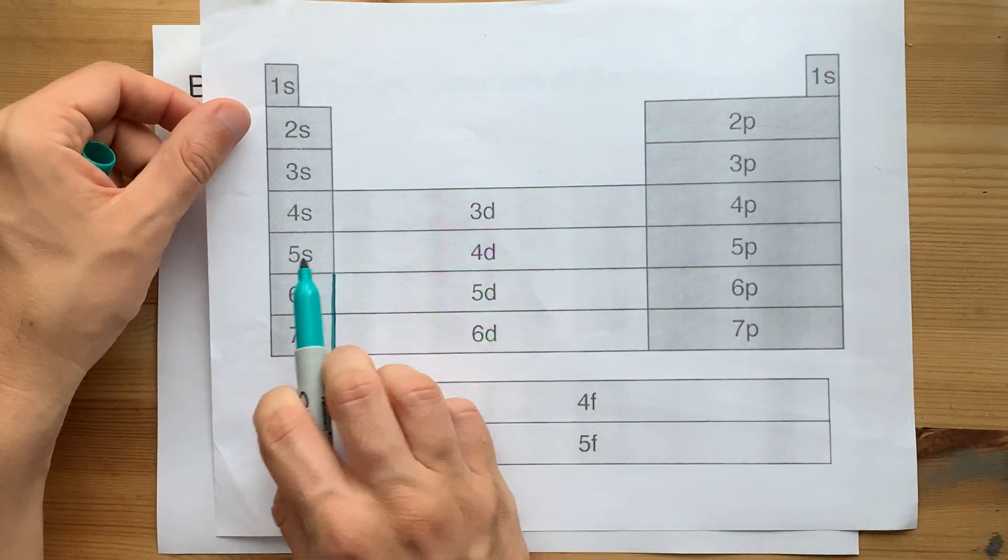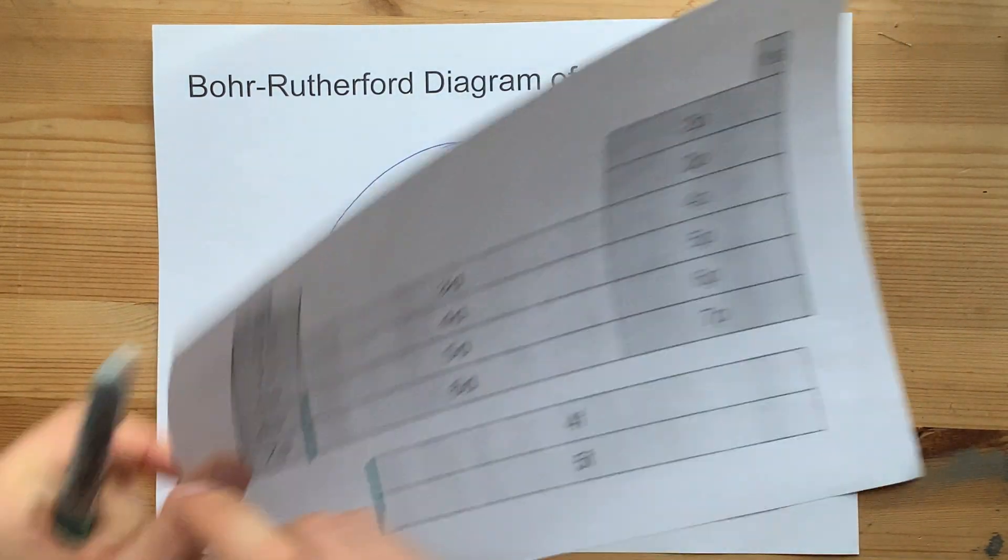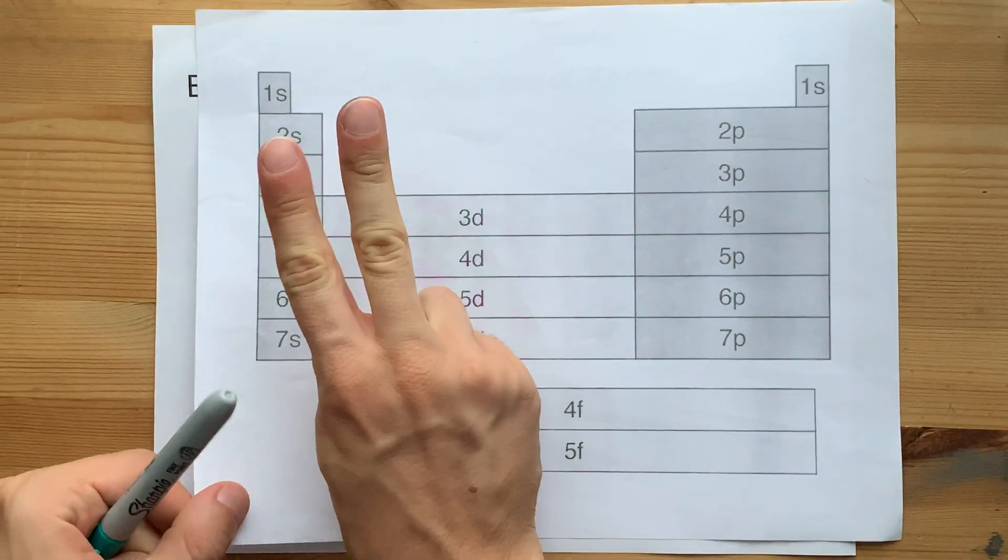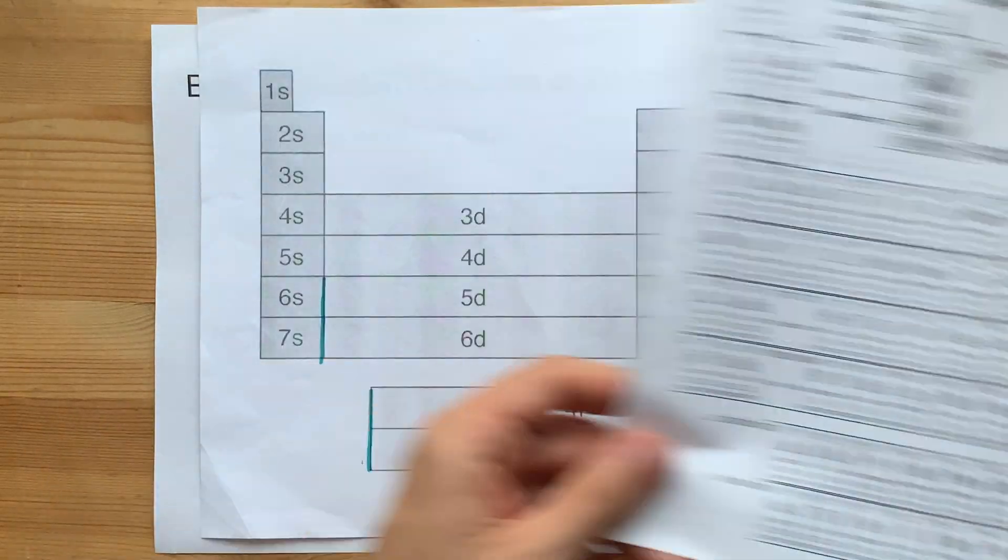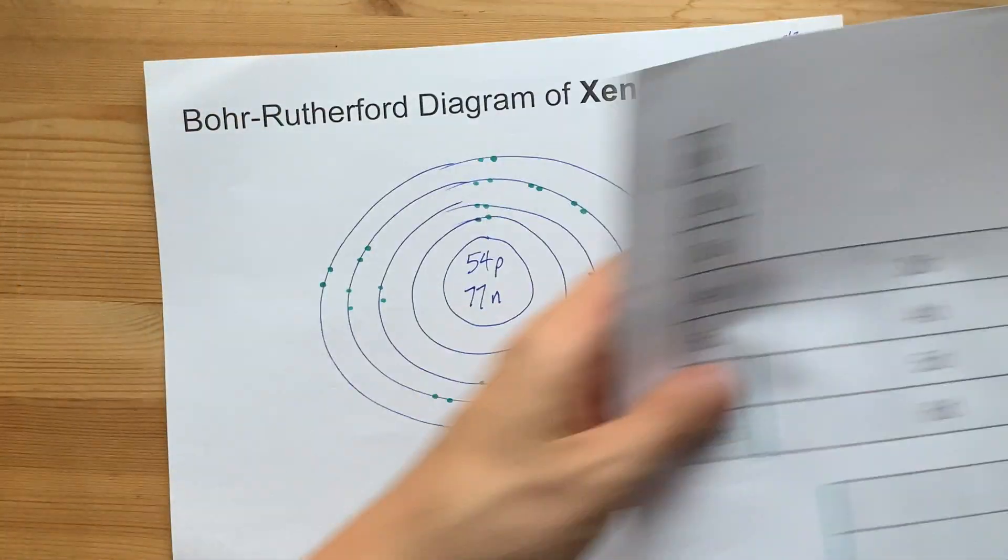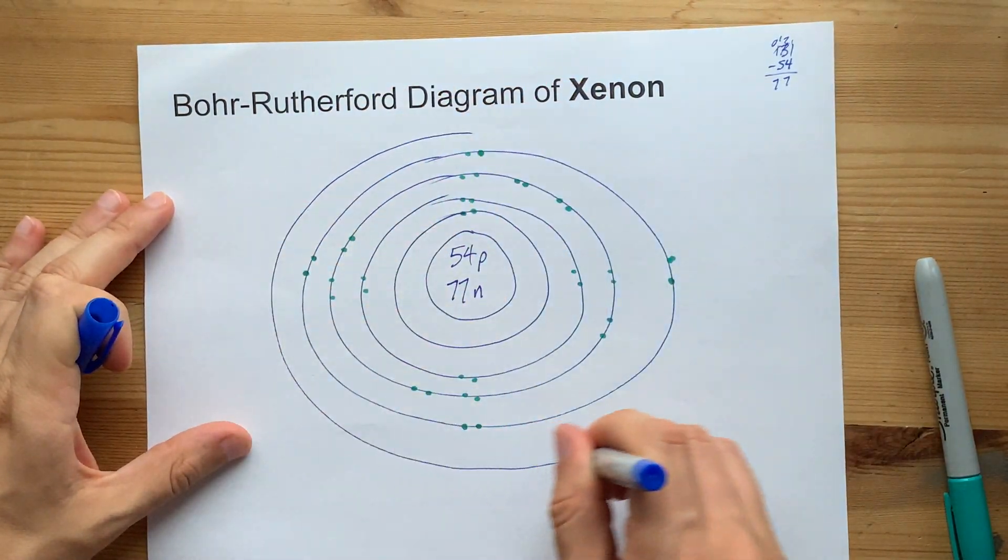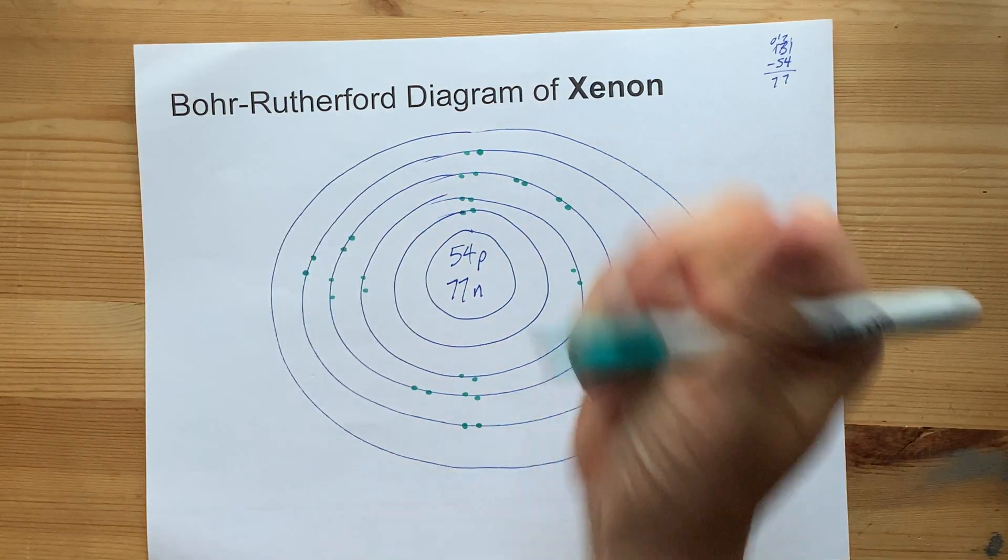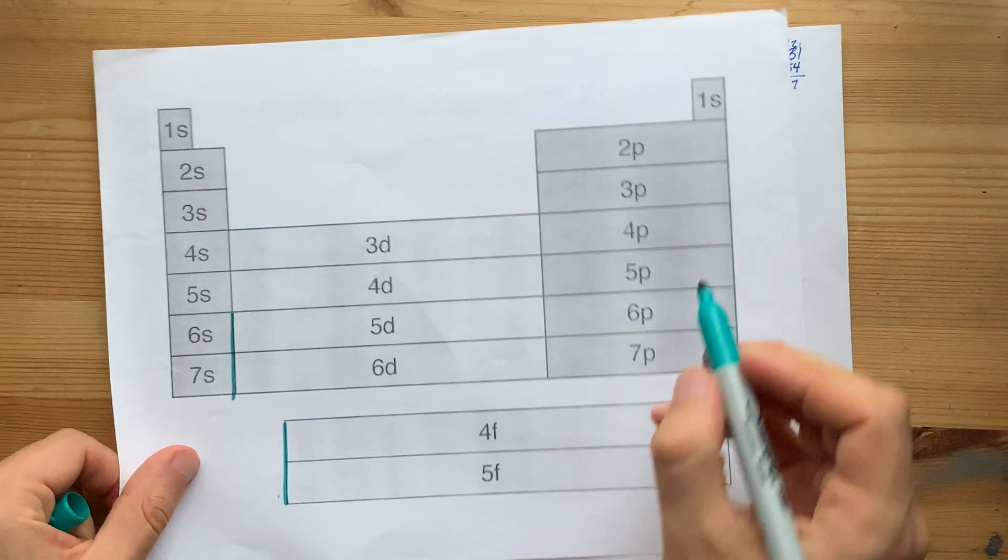Once you get there, you go down here, fifth shell. All right, I'm going to need a fifth one. S subshells hold 2 electrons. See, this block is too wide. Just 2 electrons will go on this fifth circle for now. So, fifth shell, 2 electrons, 1, 2.